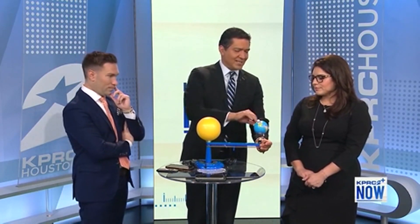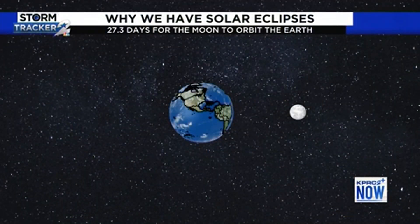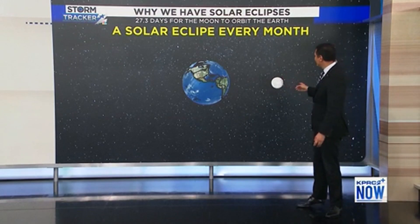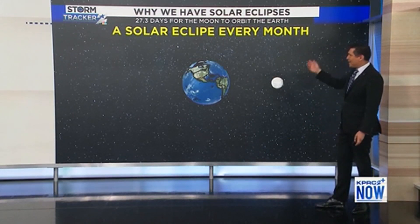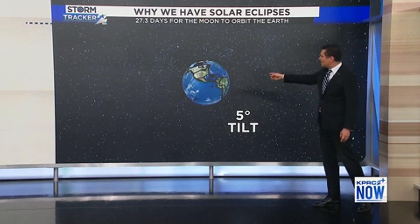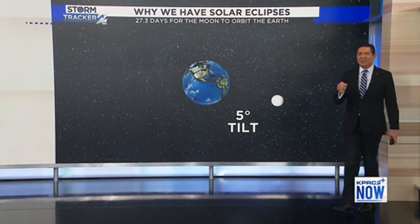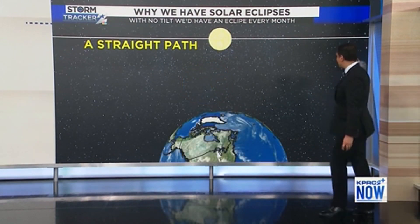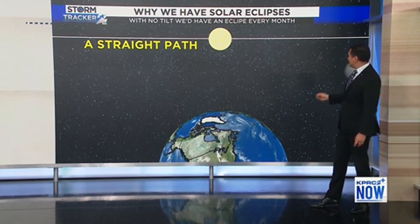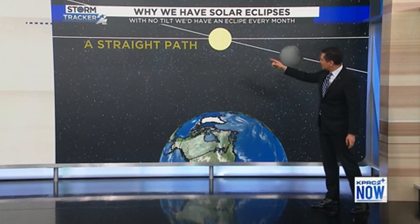The moon — do you see how it goes perfectly around the earth in this model? That is not what happens. It needs to be on a 5-degree tilt. So this is what our textbooks show: the moon traveling around the earth in a perfect line. If that happened, we would get a solar eclipse every month. But what actually happens is that the moon is tilted 5 degrees, and because of that 5-degree tilt, it becomes incredibly rare to get a total solar eclipse.